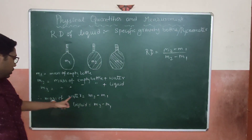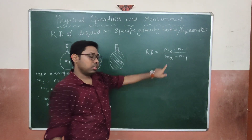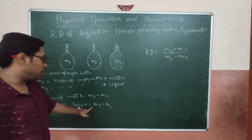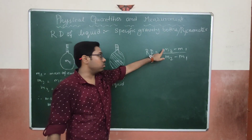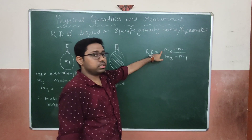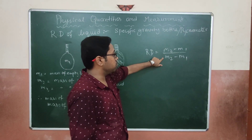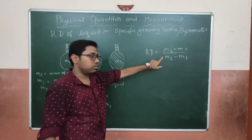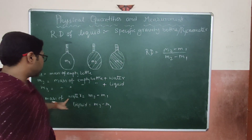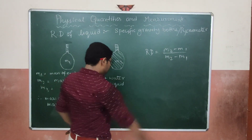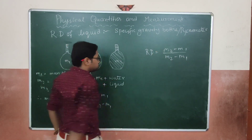Always remember: the mass of water goes in the denominator and the mass of the unknown liquid goes in the numerator. Do not write M2 − M1 in the numerator — that would be wrong. Mass of water is always in the denominator.